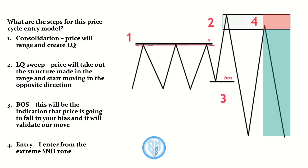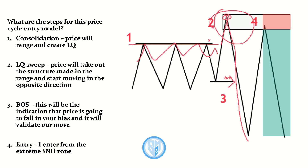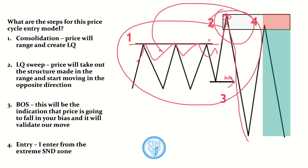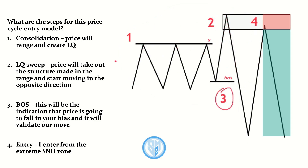We have the liquidity being built up and the liquidity sweep, but that happens many times in the market. How do we know this move is valid and will mitigate the zone we marked up? We know because we need to see the break of structure towards the downside, which validates the move that occurred during phases one and two. Seeing that break of structure validates this entire narrative.